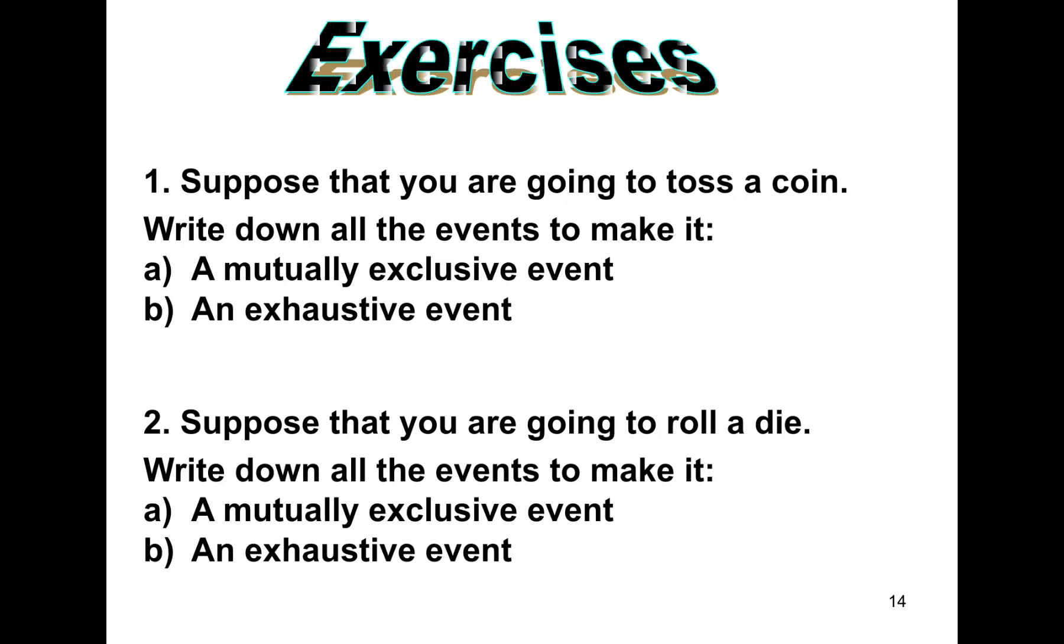So, for our exercises, number 1, suppose that you are going to toss a coin, write down all the events to make it a mutually exclusive event, and B, an exhaustive event. And number 2, suppose that you are going to roll a die, write down all the events to make it a mutually exclusive event, and B, an exhaustive event. You may discuss this with your lecturers. So, thank you. See you next time. Bye-bye.